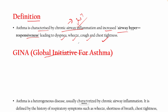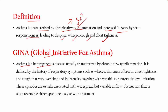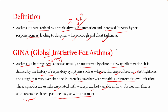Asthma is clinically guided by the GINA guidelines — Global Initiative for Asthma. GINA defines asthma as a heterogeneous disease, usually characterized by chronic airway inflammation, defined by a history of respiratory symptoms like wheeze, shortness of breath, chest tightness, and cough. Wheeze is generally a high-pitched whistle sound. These symptoms are associated with variable expiratory airflow limitations, which are often reversible spontaneously or with treatment. This is the GINA definition as per 2015.